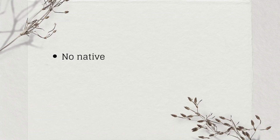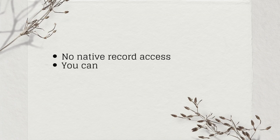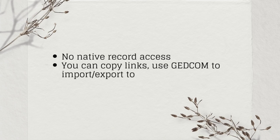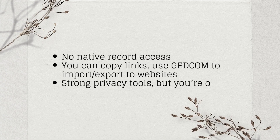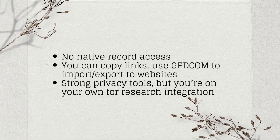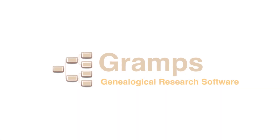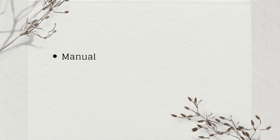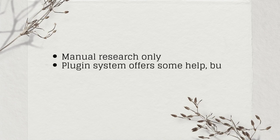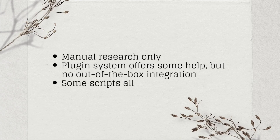Reunion has no native record access. You can copy links and use GEDcoms to import or export to websites. It has strong privacy tools, but you're on your own for research integration. Gramps is manual research only. Its Gramps system offers some help, but there's no out-of-the-box integration. Some scripts allow API polling, but it's very technical.